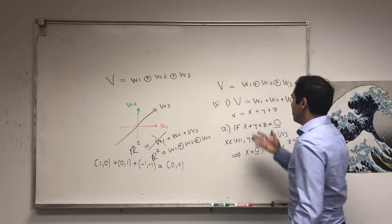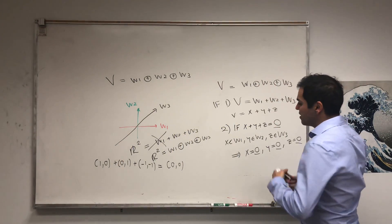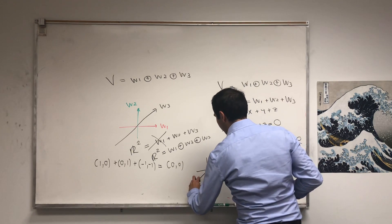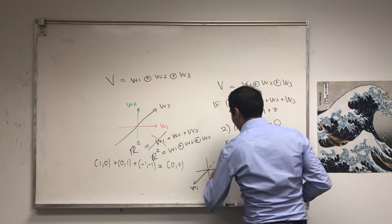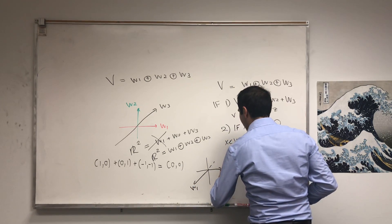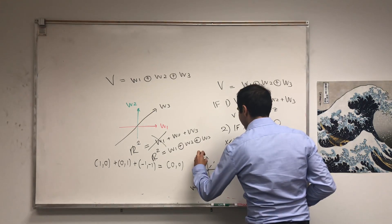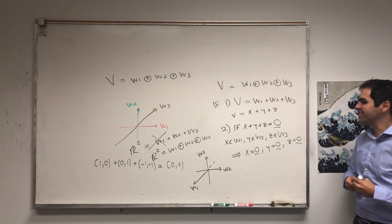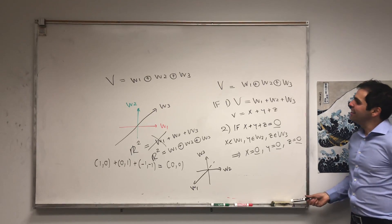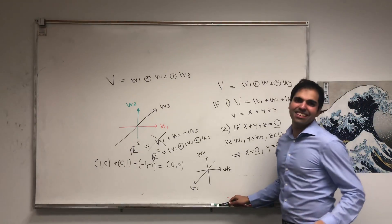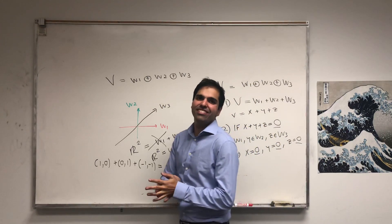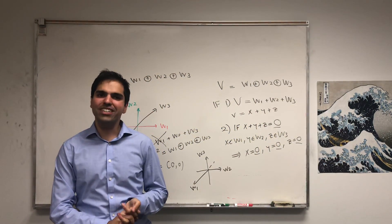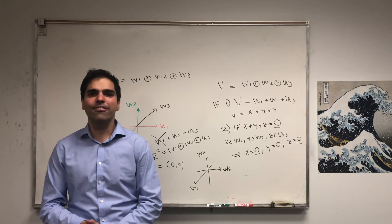So that example is not a direct sum. But in R3, the x-axis, y-axis, and z-axis would be an example of a direct sum of three things. I hope you liked this little exercise and this discussion of direct sums. If you want to see more math, please make sure to subscribe to my channel. Thank you very much.